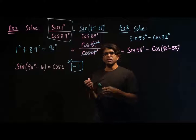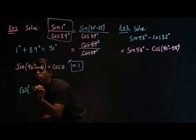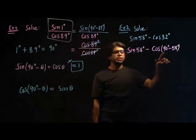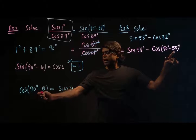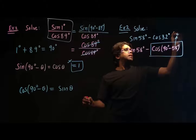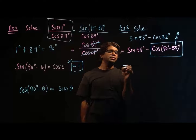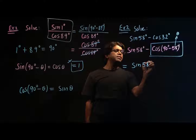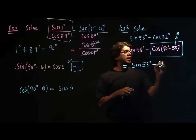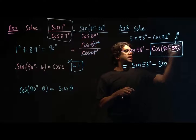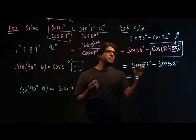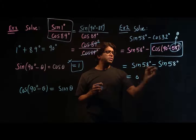Now I'm going to use another formula. The complementary formula for cosine is: cosine of 90 degrees minus theta equals sine theta. So cosine of 90 minus theta becomes sine theta, and my theta is 58 degrees. So cosine 32 degrees can be written as sine 58 degrees. That means sine 58 minus sine 58 equals zero, because they are the same term.